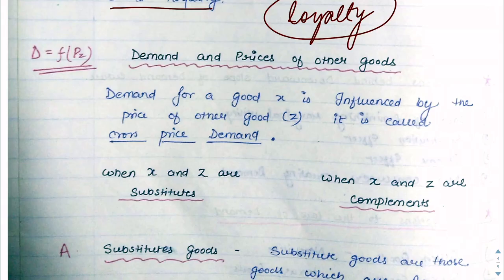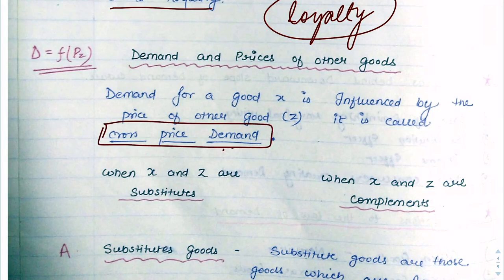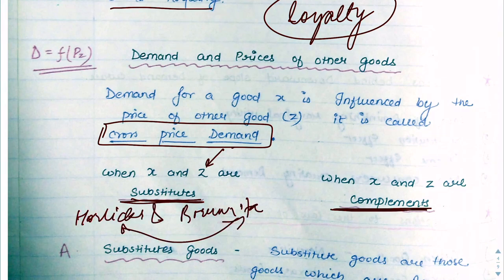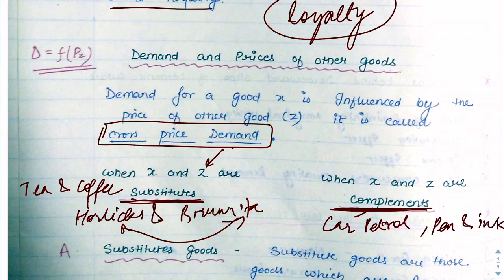Now let's go to demand and prices of other goods. The market is not just our product — other products' prices change too. The effect of other products' price changes on our product's demand is called cross price demand. There are two cases: either the two goods compared are substitutes or complements. Substitutes are goods that can replace each other — like Horlicks and Bournvita, or tea and coffee. Complements are goods used together — like car and petrol, or pen and ink.